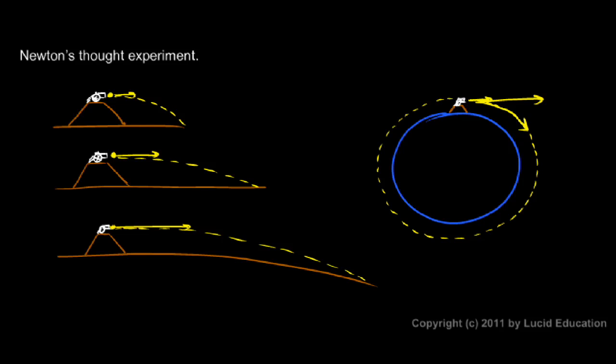So an object in orbit is essentially a projectile. It's in free flight under the influence of only gravity. And we're not even considering air resistance. It's in free fall, just orbiting around the Earth. It's falling toward the Earth, but never getting any closer.